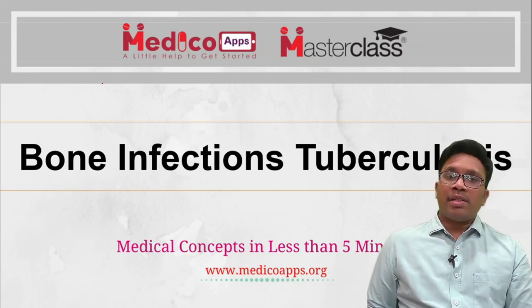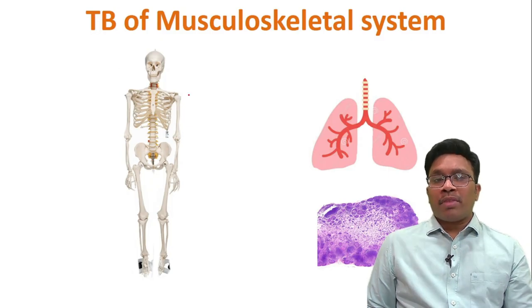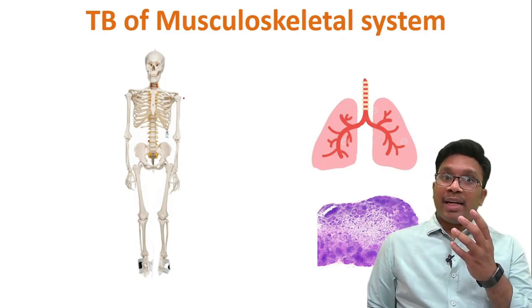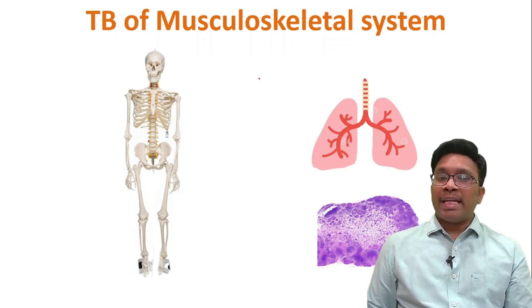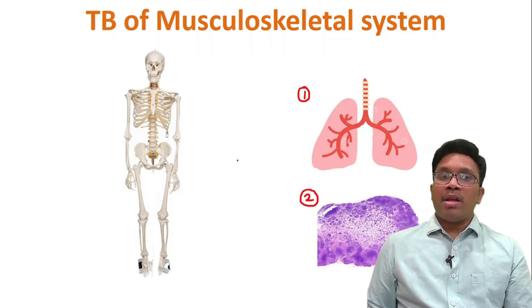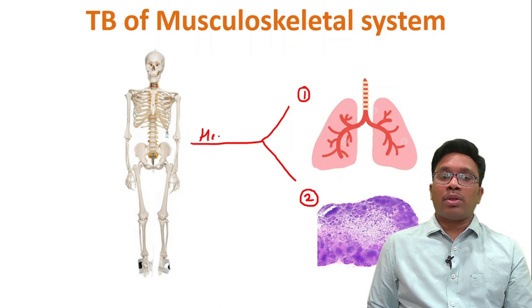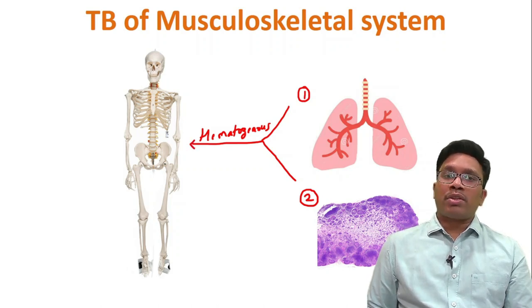Hi, this is Dr. Karthik Manchala. Let us discuss tuberculosis of the musculoskeletal system. This tuberculosis is most commonly secondary — secondary to tuberculosis elsewhere in the body. The most common primary site is the lung, and the second most common is the lymph node. From there, the infection reaches the musculoskeletal system via the hematogenous route — that is, the bloodstream.